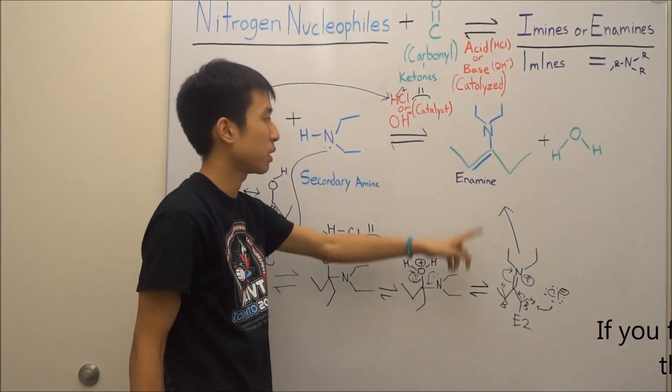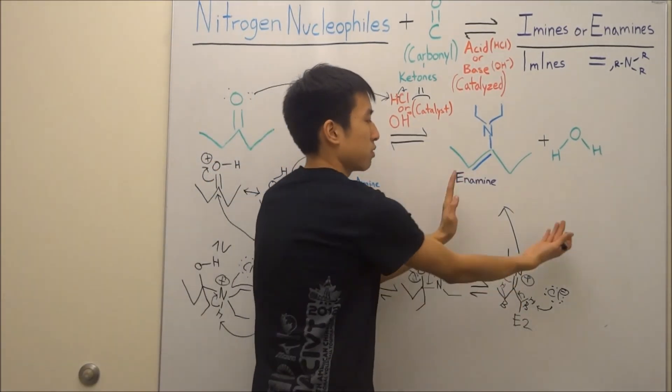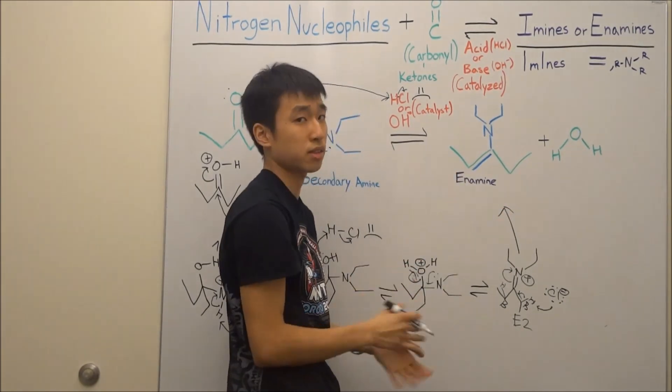To get your double bond right here, the enamine. I know it's on this side, but it's symmetrical. So if you just flip your molecule around, it'll look like this. It's not that big of a deal.